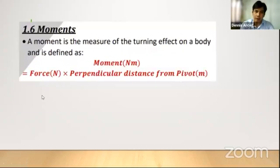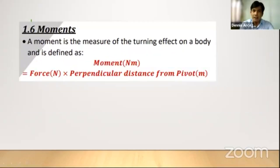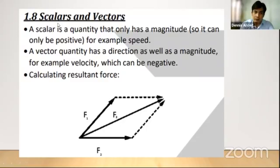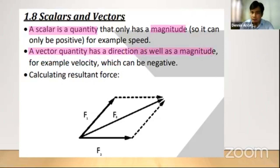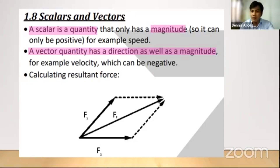Next: moments, scalars, and vectors. A scalar quantity has only magnitude. A vector quantity has both magnitude and direction. If a quantity has direction, it is a vector; if it has no direction, it is a scalar. Sometimes exam questions ask you to define these terms or give examples. Make sure you remember the distinction.